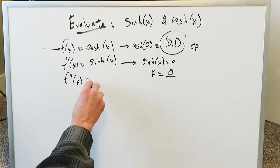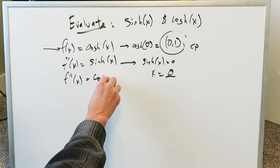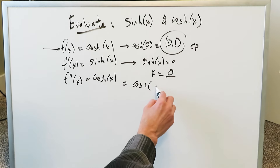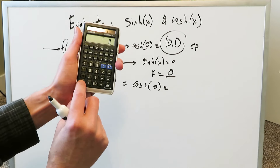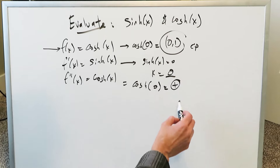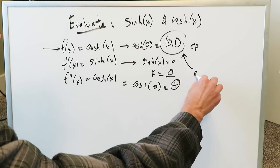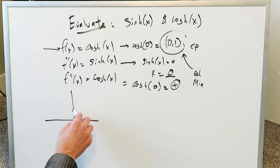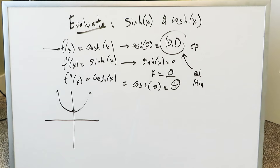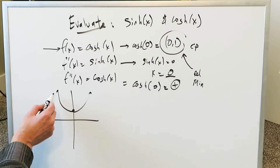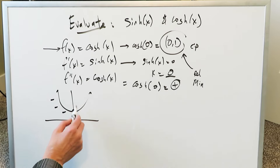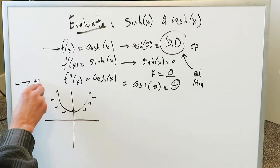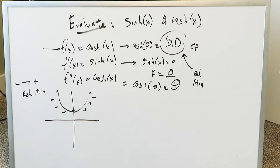Now we take the second order derivative of hyperbolic cosine, which takes us back to the original function. Plugging x equals zero into hyperbolic cosine gives a positive one. That positive value tells us our critical point is a relative or local minimum. Graphing this out, we see a curve at (0, 1) with downward-sloping tangent lines to the left and upward-sloping to the right — a transition from negative to positive slope — confirming a local minimum.